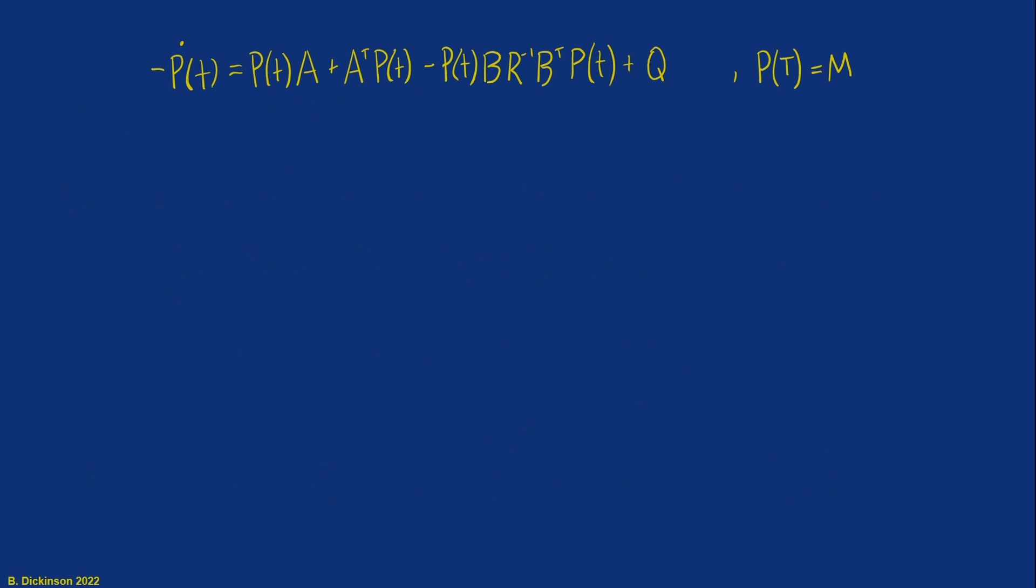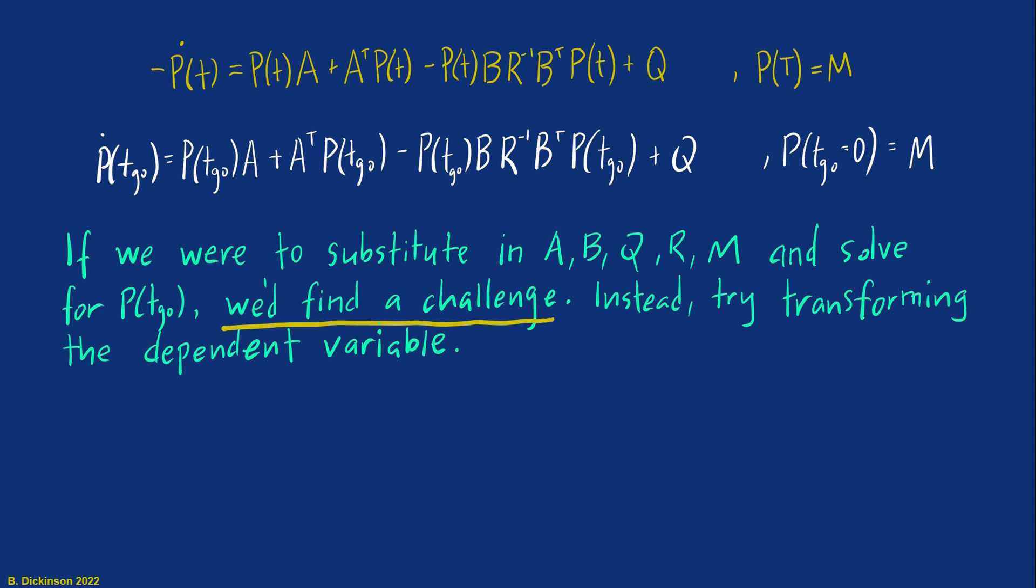So here's where we were with our DARE. Here's where we are now having transformed it with time to go. And at this point, you may be tempted to substitute in all of the problem data, A, B, Q, R, M, and integrate out the terms in this matrix equation. But if you do that, and you're like me, you're going to find a challenge. So instead of spending further time trying to work through and manipulate, there must be an easier way to do this.